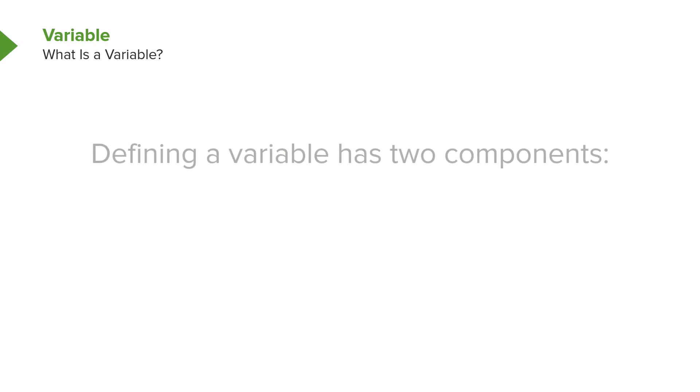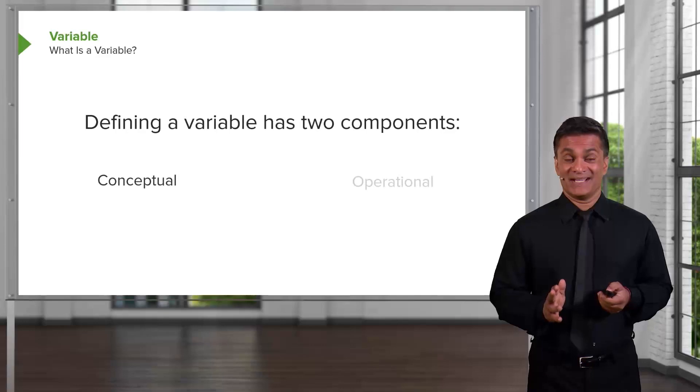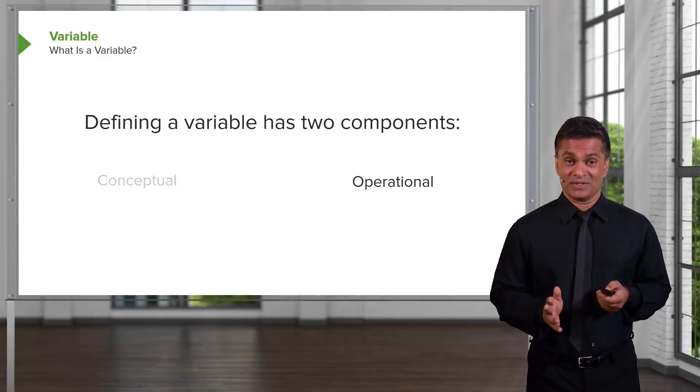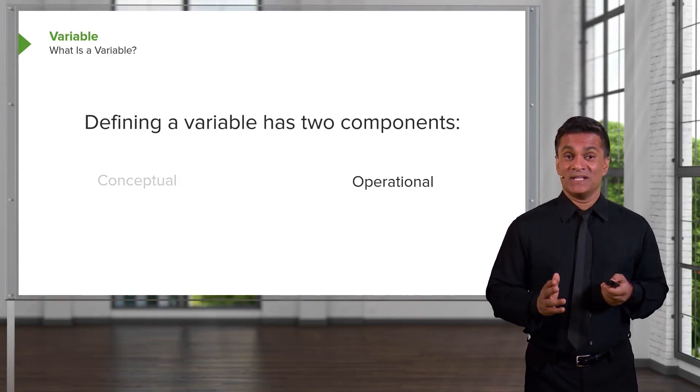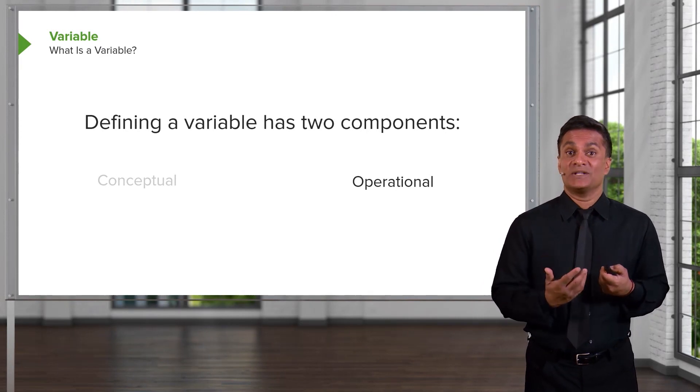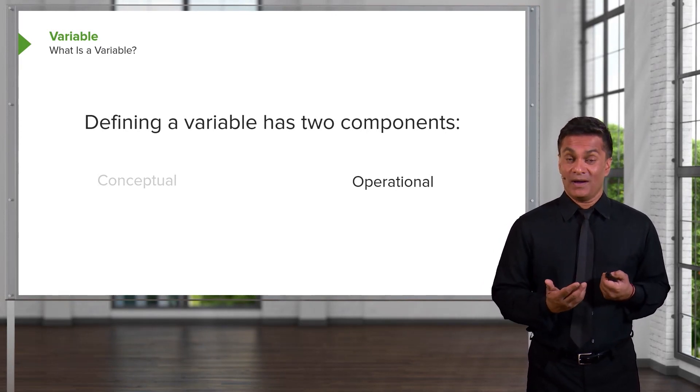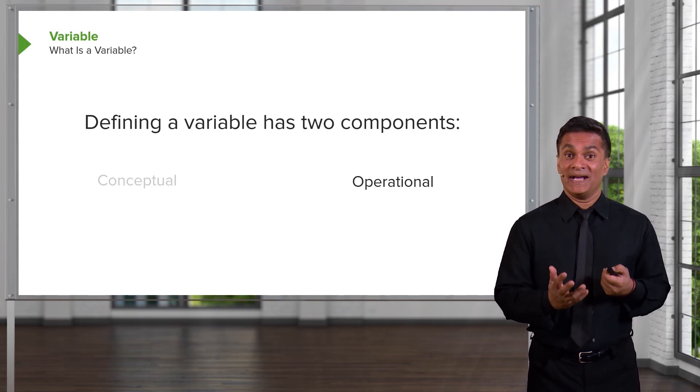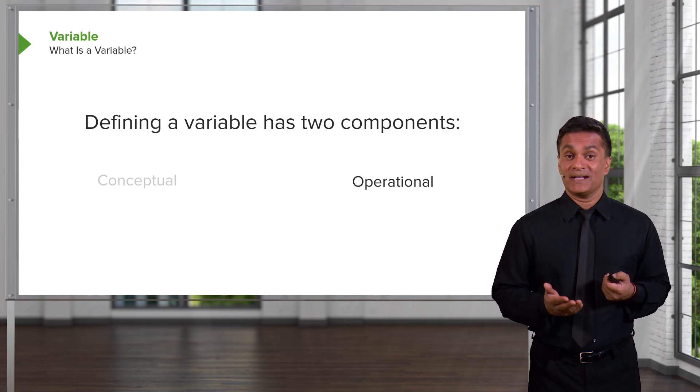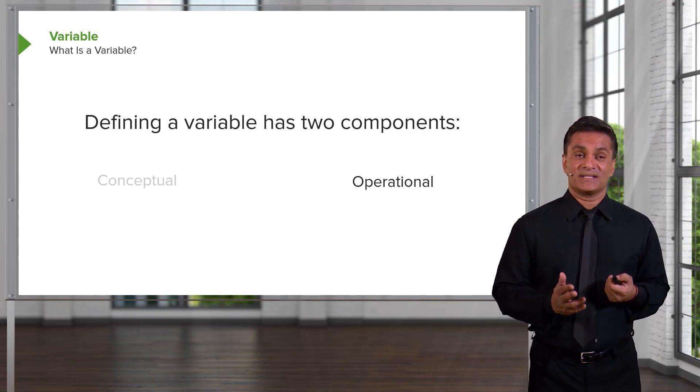So when we're defining a variable, there are actually two components to consider. There's a conceptual component and an operational component. The concept is when we think about the thing we're trying to measure conceptually. The operational component is when we define the variable itself. And it's that operational aspect on which the mathematics is performed.